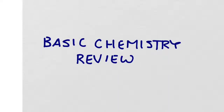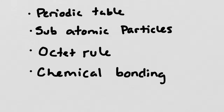Hey folks, this is Bogosian. This screencast is going to be for you folks who did not take CHEM 300, or maybe just need a little refresher on chemistry. The things we're going to cover are a really brief review of the periodic table, a little bit about subatomic particles, something called the octet rule, and then the basics of chemical bonding.